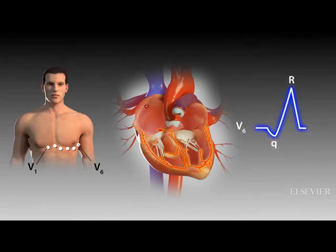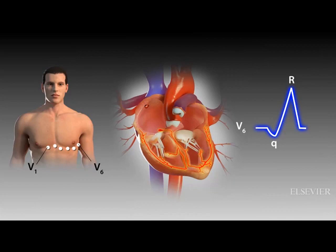Conversely, viewed from an electrode in the V6 position, septal and ventricular stimulation produces a QR pattern. The Q wave is a septal Q wave reflecting the left to right spread of the stimulus through the septum away from lead V6. The positive R wave reflects the leftward spread of ventricular stimulation voltages through the left ventricle.